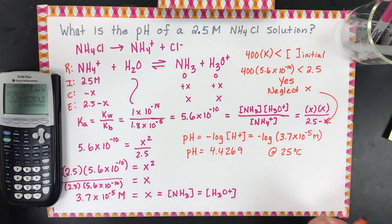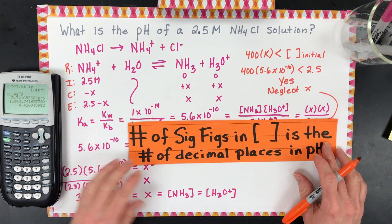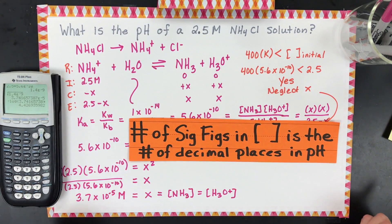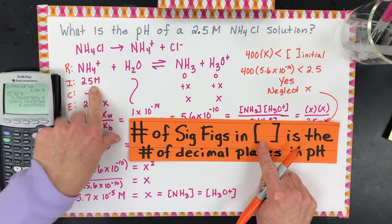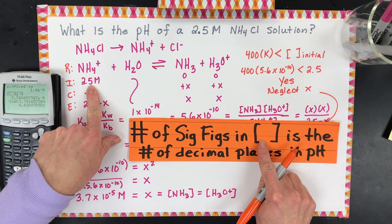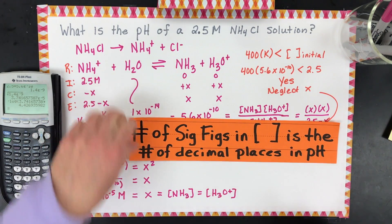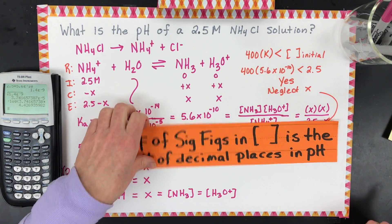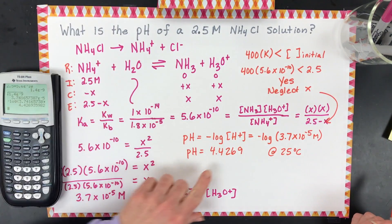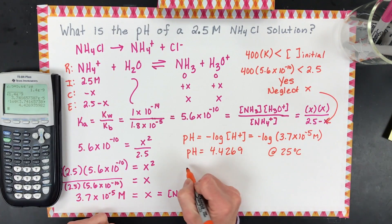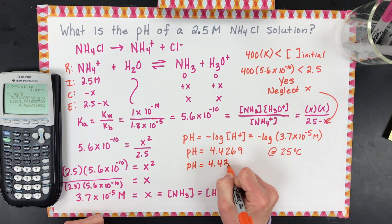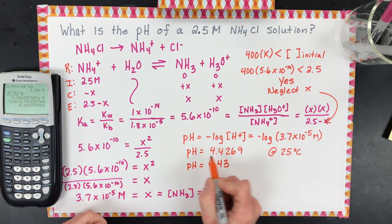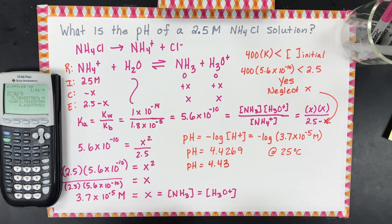For sig figs: the number of sig figs in the concentration — two — is the number of decimal places in the pH. So I can only keep two decimal places, making the final answer 4.43. Box it out — make your teachers smile.